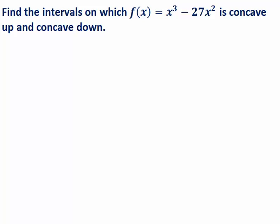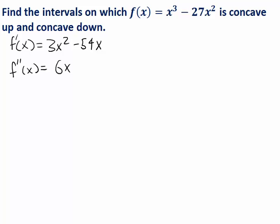So let's start by finding the second derivative. To do that, we need the first derivative, which would be 3x squared minus 54x, and then the second derivative would be 6x minus 54.